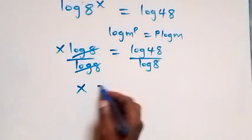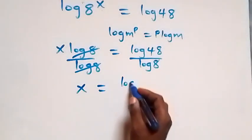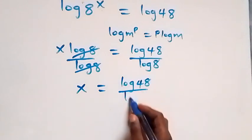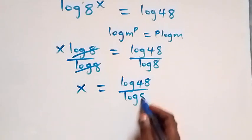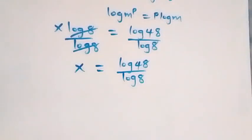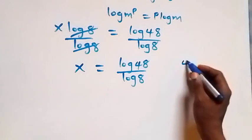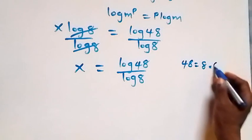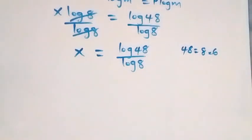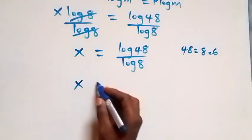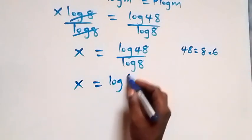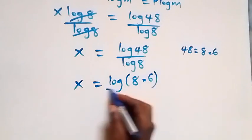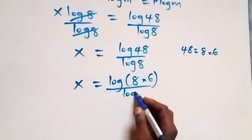What we have is x equals log 48 over log 8. From here we can reduce this by writing 48 as 8 times 6, so x equals log(8 times 6) over log 8.